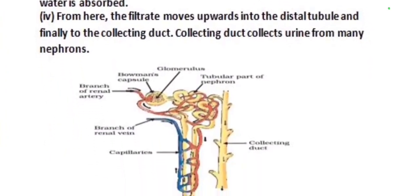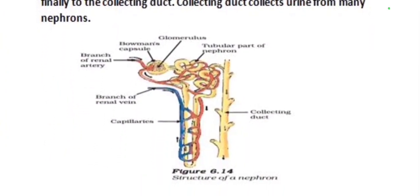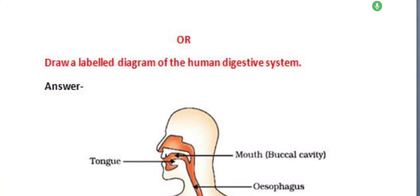After that, you have to draw the structure of the nephron — a labeled diagram of this nephron.